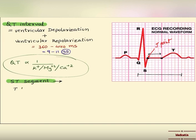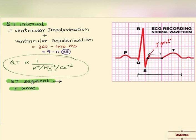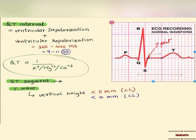The T wave follows the ST segment — if the ST goes up, the T goes up, and if the ST goes down, the T goes down. The vertical height is important: it should be less than 5 mm in limb leads and less than 10 mm in chest leads.